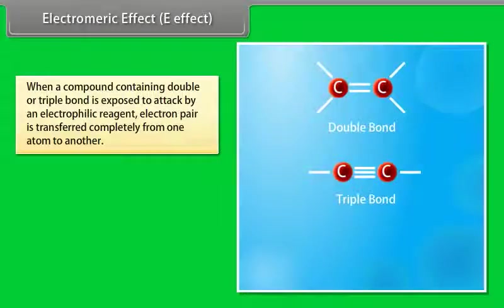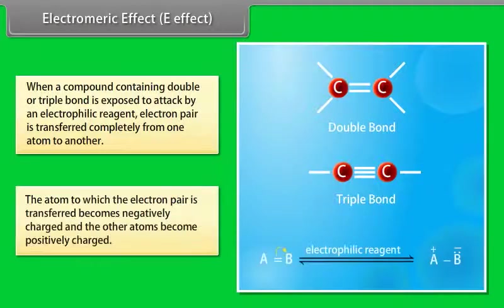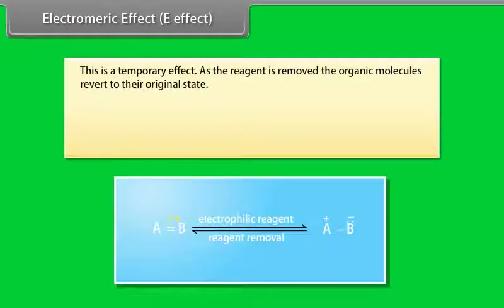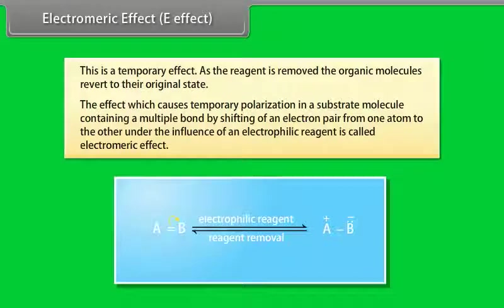The electromeric effect (E effect) occurs when a compound containing a double or triple bond is exposed to an electrophilic reagent — the electron pair is transferred completely from one atom to another. The atom receiving the electron pair becomes negatively charged, and the other becomes positively charged. This is a temporary effect; when the reagent is removed, the organic molecule reverts to its original state.